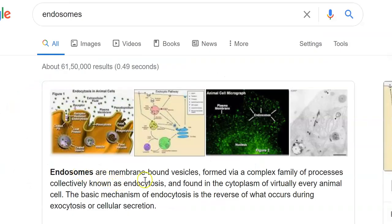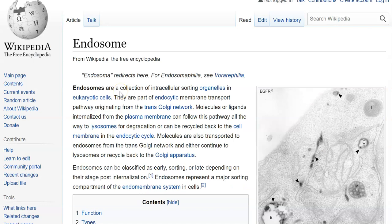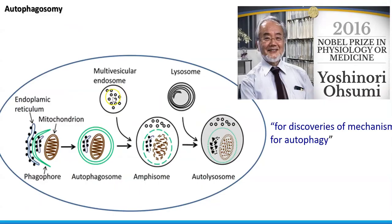The autophagosome is further joined by a multivesicular endosome. Endosomes are membrane-bound vesicles formed via a complex family of processes collectively known as endocytosis, found in the cytoplasm of virtually any animal cell. They can also be referred to as intracellular sorting organelles in eukaryotic cells. This multivesicular endosome fuses with the autophagosome, which is finally joined by a lysosome to digest the worn-out organelles, forming the final structure called an autolysosome.